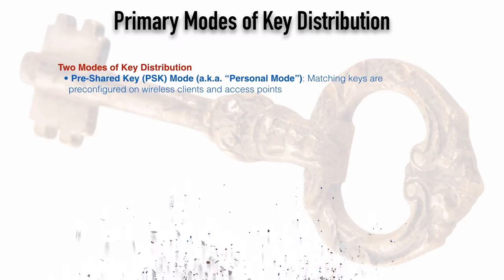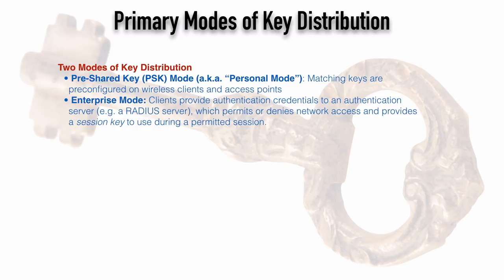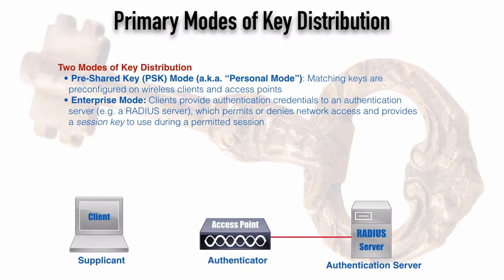Our other mode is enterprise mode, which is more scalable. Here, clients provide their authentication credentials to an authentication server — typically a RADIUS server — which can permit or deny network access. If permitted, the authentication server issues a temporary session key to both the client and the wireless access point. This is known as 802.1x. The three big players in 802.1x are: a supplicant (the device asking for access), an authenticator (the access point), and the authentication server (typically a RADIUS server).